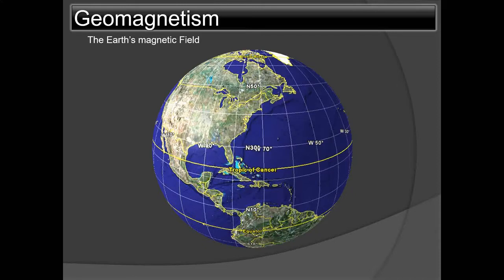We'll also cover the Earth's magnetic north pole, which is different from the true north. True north is denoted by 000, but the magnetic north pole is where a freely suspended magnetic needle actually points — it does not point towards true north. This is the property used by a ship's magnetic compass.